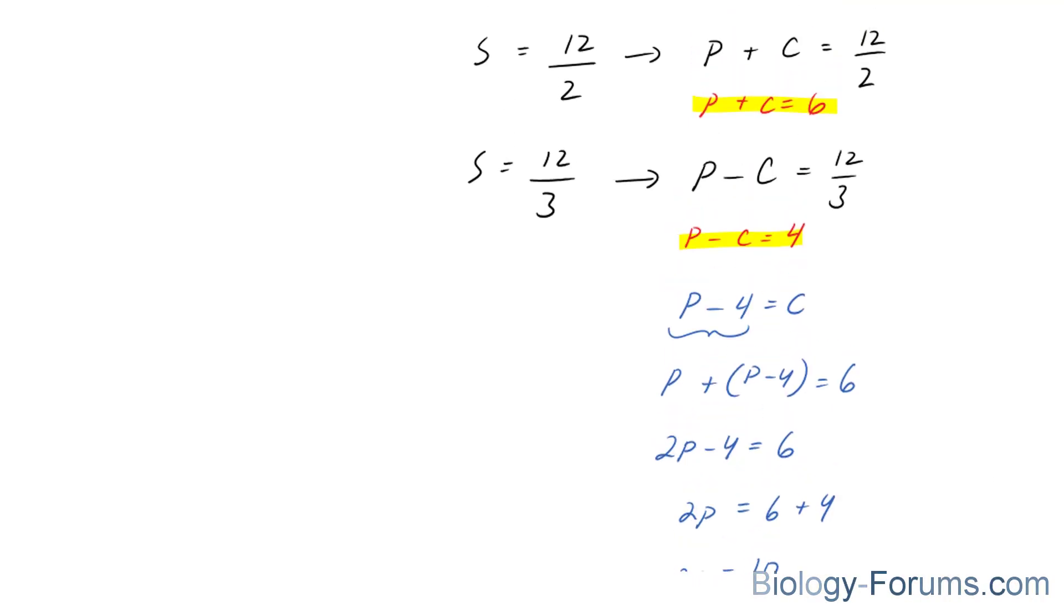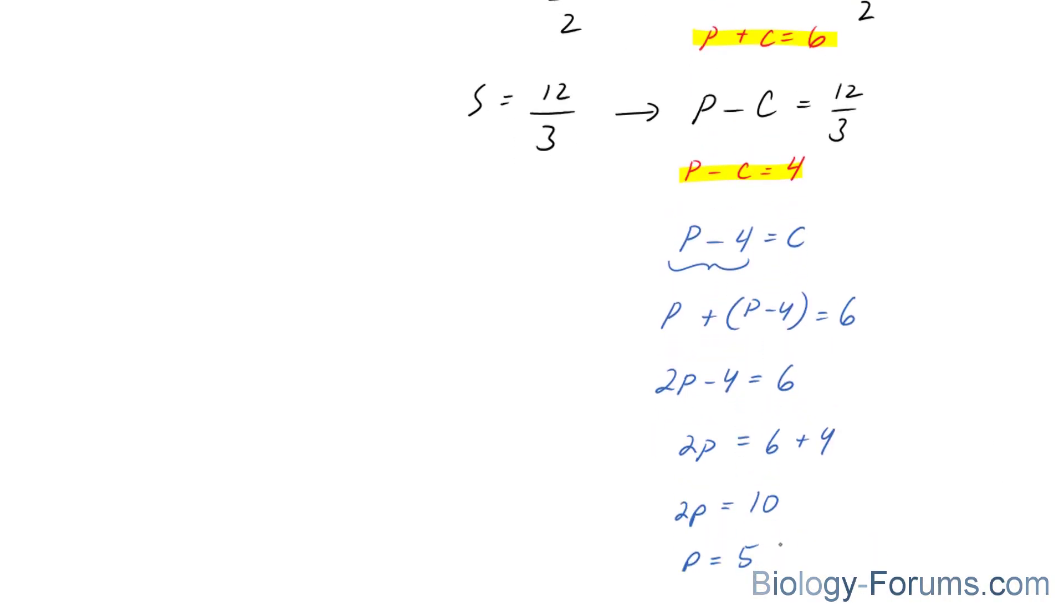So we found our P value, his personal speed, of 5 kilometers per hour.